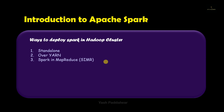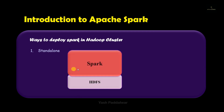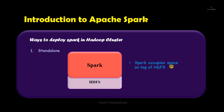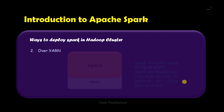In the standalone way, the Spark component sits on top of HDFS (Hadoop Distributed File System). As you can see in the diagram, Spark occupies space on top of HDFS, and in this way the Spark component as well as the MapReduce component both run side by side to perform all Spark jobs on a particular cluster. So just remember: Spark and MapReduce run side by side.